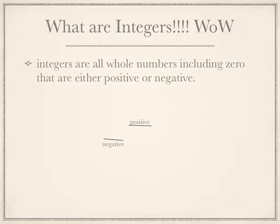Integers by Theo. What are integers? Integers are all whole numbers including zero that are either positive or negative.